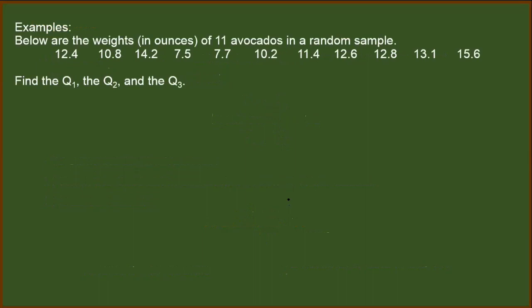Say for instance, we have these weights in ounces of 11 avocados in a random sample. Then we have to find the first, second, and the third quartile. You may pause this video and on your own rank or arrange this data set in ascending order.